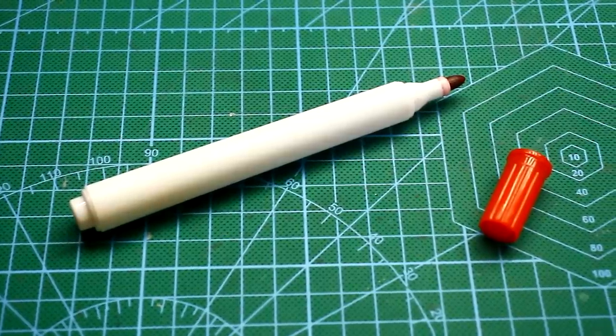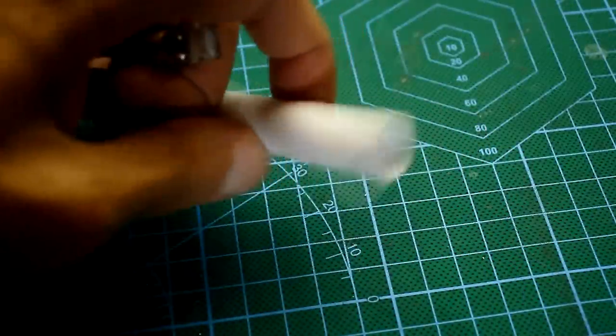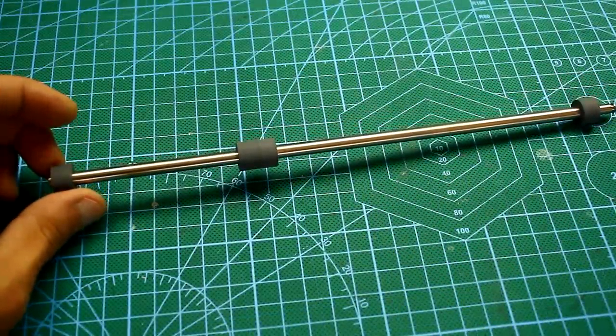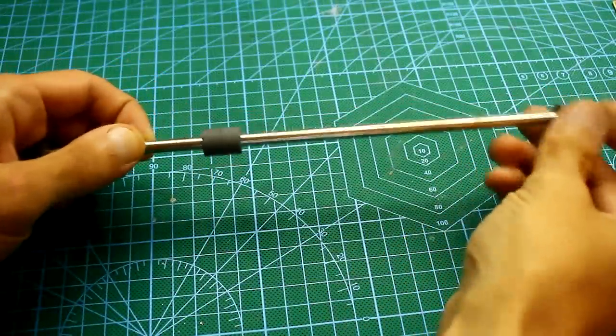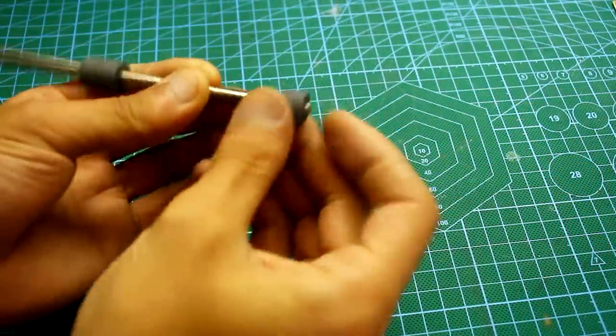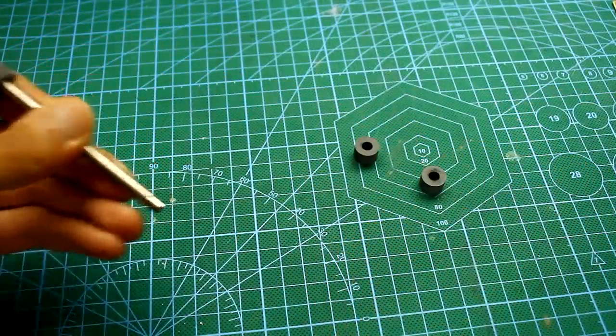I took a marker, cut it from two sides and removed all the insides. Among the spare parts of the old printer I found the T-shaft on which there were such rubber bands. They will be useful for fixing the tip.